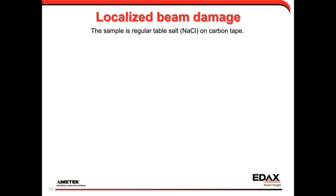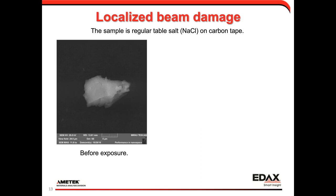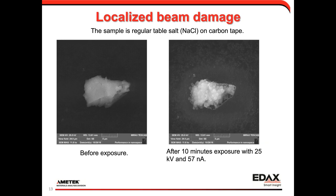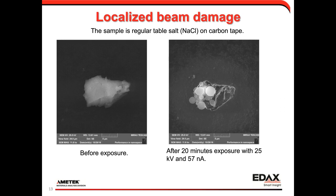Now let's break some things. I took regular table salt — sodium chloride from our cafeteria — crushed it, mounted a small grain on carbon tape, and first imaged it at low current just to confirm it's NaCl. Then I exposed it to 25 kV, 57 nanoamps for 10–20 minutes. The result: the salt grain looks completely transformed — it appears as though we're boiling material off the surface.